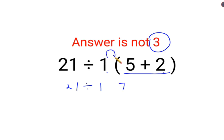And since there is no sign between 1 and the bracket, it is understood that it is multiplication. Now at this point, a lot of people thought that we just do this 21 divided by 1 multiplied by 7 is 7. Answer is 3. This is where people went wrong.